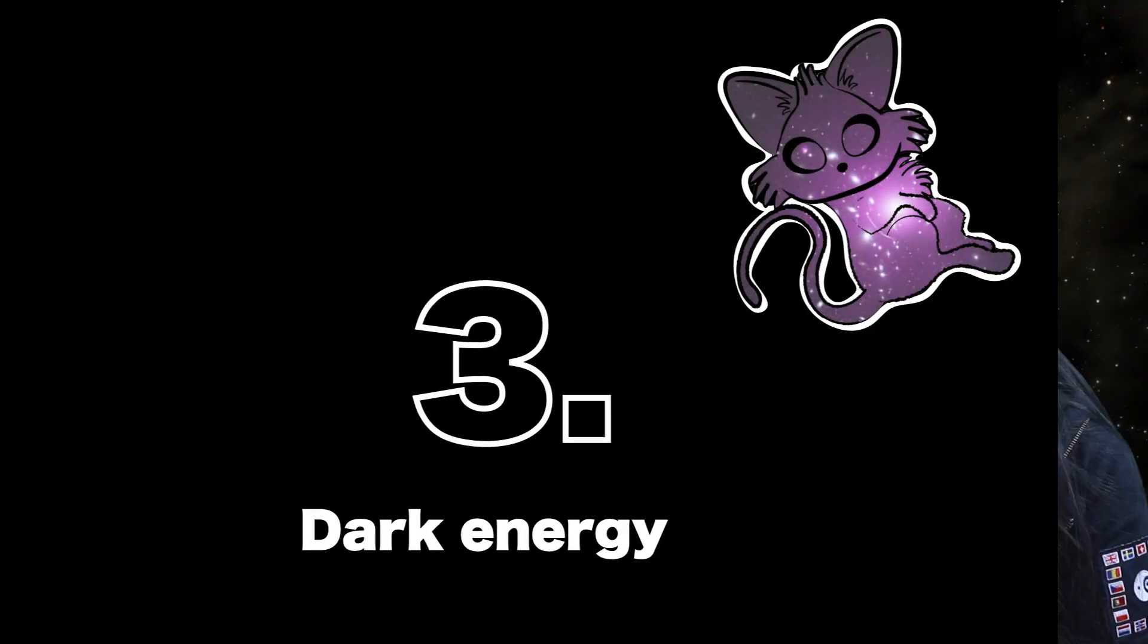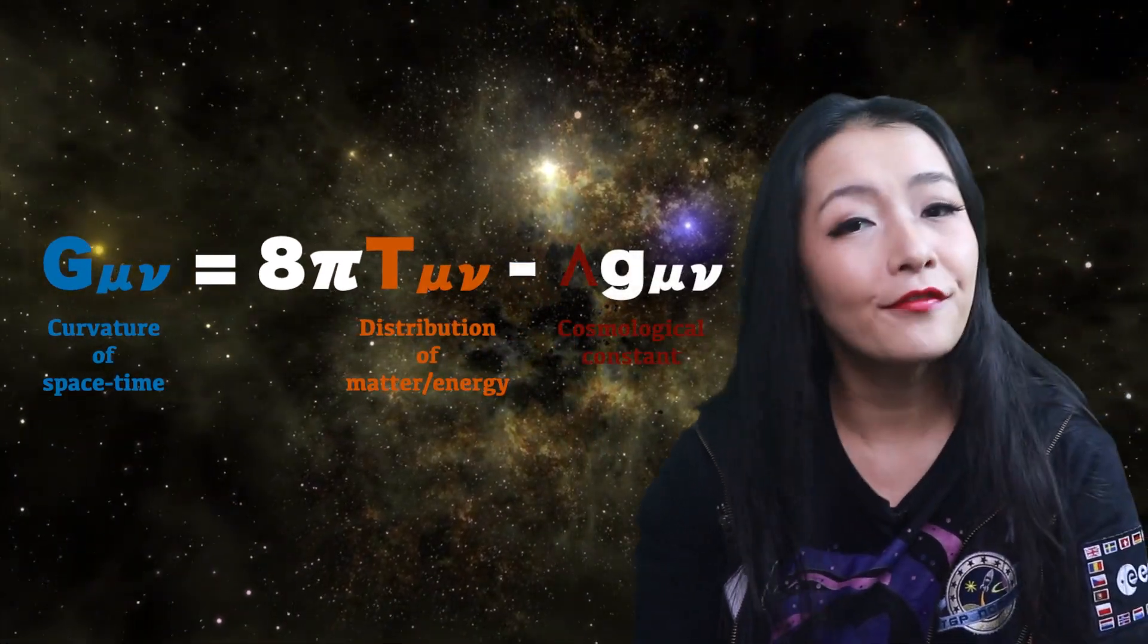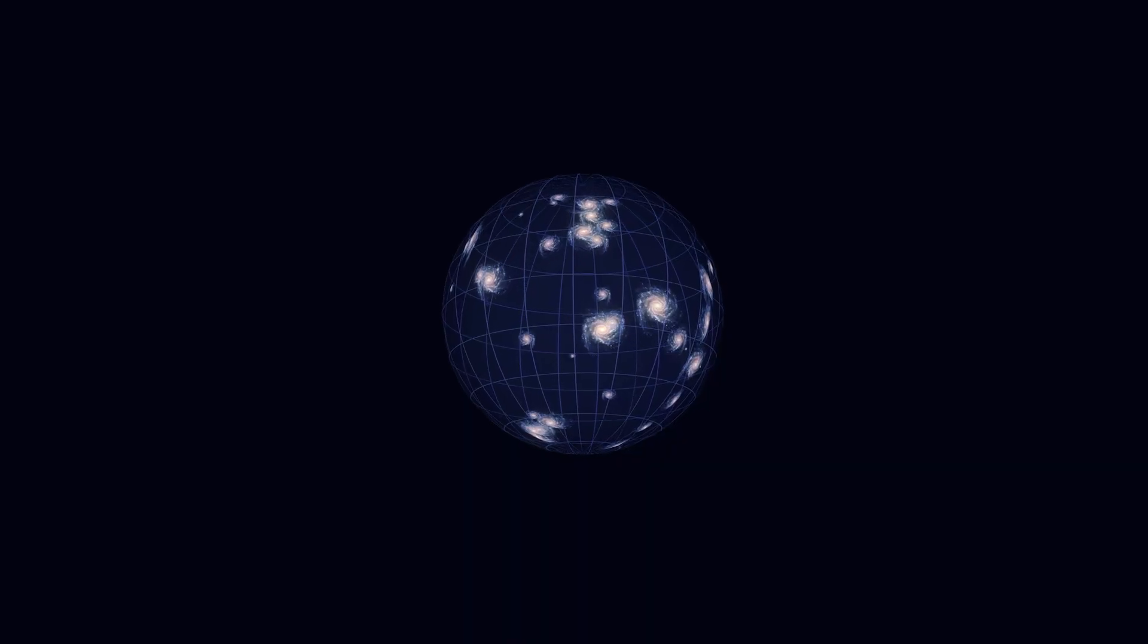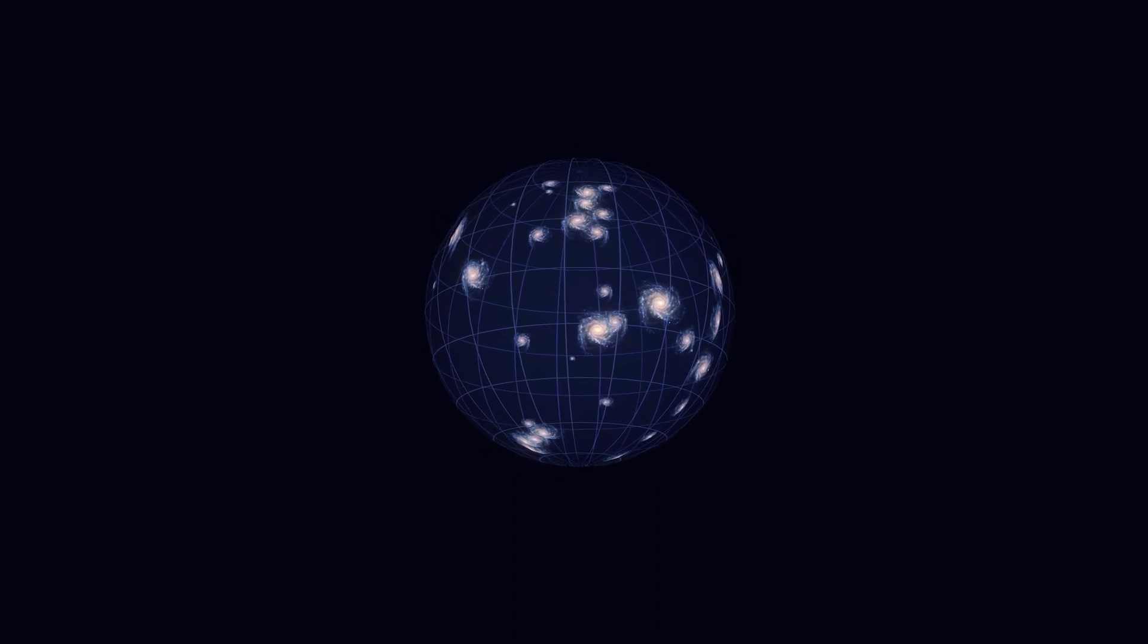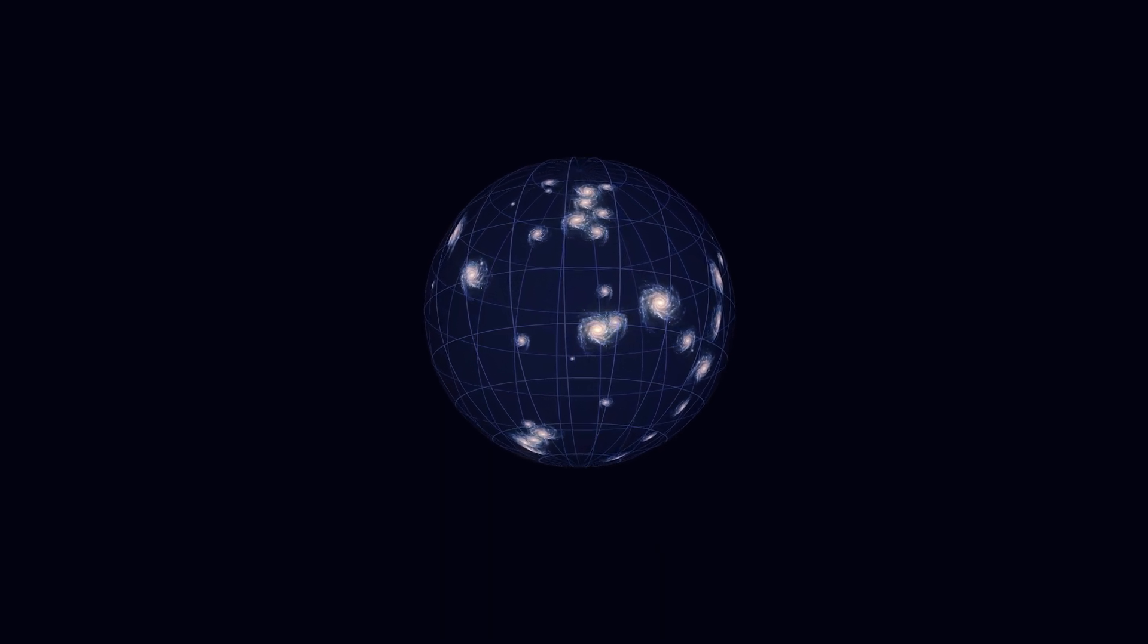In 1917, Einstein added the cosmological constant parameter, lambda, as a fudge factor to his field equations to counter the effects of gravity and produce a static universe, because at the time, they thought the universe was stationary. But later, when it was observed that the universe was expanding, he removed it.